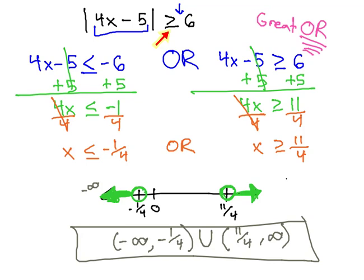Oops, or equal to. What did I do wrong? If it's or equal to, we need to have closed dots. Sorry about that. Or equal to should always have a closed dot, which means our brackets should actually be square brackets, not curved at negative 1 fourth and 11 fourths. Inclusive, because it's or equal to. Greater than or equal to 6.